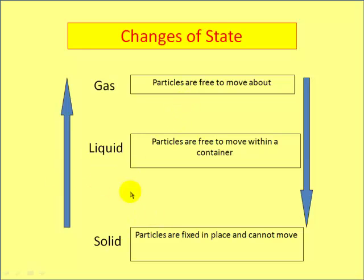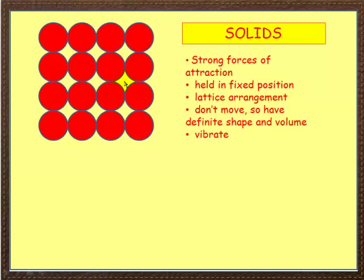Okay, let's look a bit more detail now at each of these states. First of all, the solid. Now, solid, here are the particles in solid. They've got very strong forces of attraction. They are held in a fixed position, what we call a lattice arrangement. They don't move, so they have a very definite shape and volume. And all they can do is vibrate.